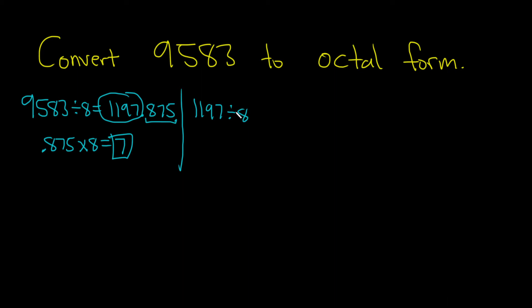1197 divided by 8. So I got 149.625. You want the remainder. So you take this piece, 0.625, and you multiply it by 8. So this is 0.625 times 8. So 5. The remainder is 5.